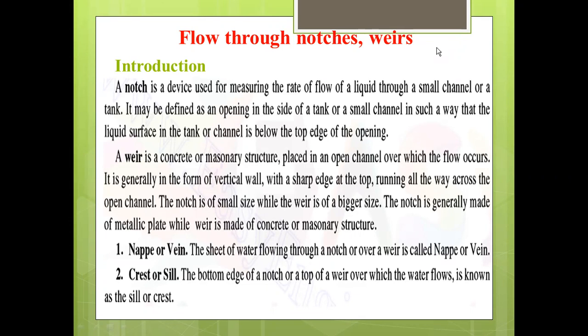The important terms in notches and weirs: first is nappe or vein — the sheet of water flowing through a notch or over a weir is called the nappe or vein. Second is crest, also called sill — the bottom edge of a notch or top of a weir over which the water flows is known as the sill or crest.